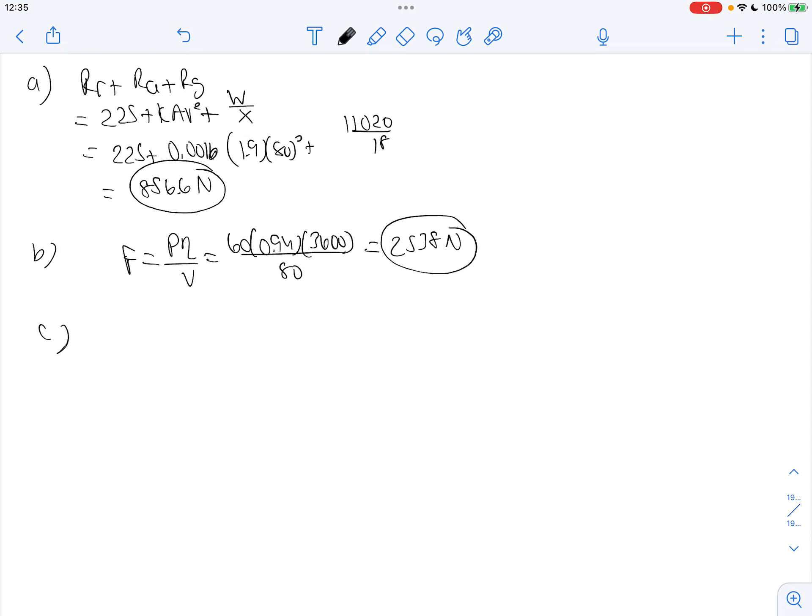For part C, we'd like to find the acceleration while ascending the gradient. We can set our tractive effort 2,538 equal to our resistance 856.6 plus 1,020 times acceleration divided by gravity. So our acceleration is 1.49 meters per second squared.